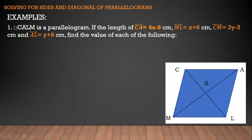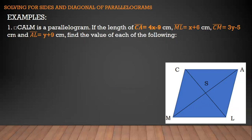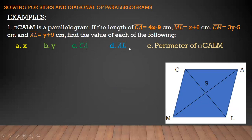Let's have an example. Parallelogram CALM: the length of segment CA is equal to 4x minus 9 cm, and segment ML is equal to x plus 6 cm. Segment CM is equal to 3y minus 5 cm, and segment AL is equal to y plus 9 cm. Find the value of each of the following: x, y, segment CA, segment AL, and the perimeter of parallelogram CALM.